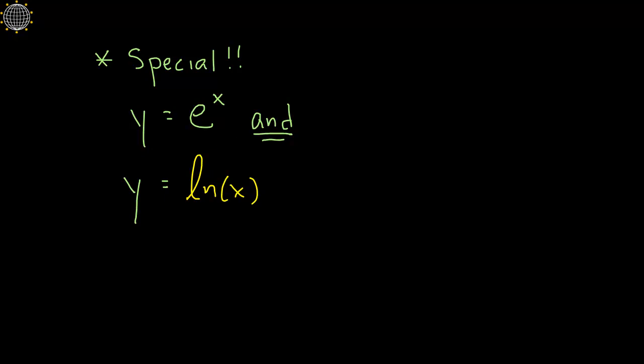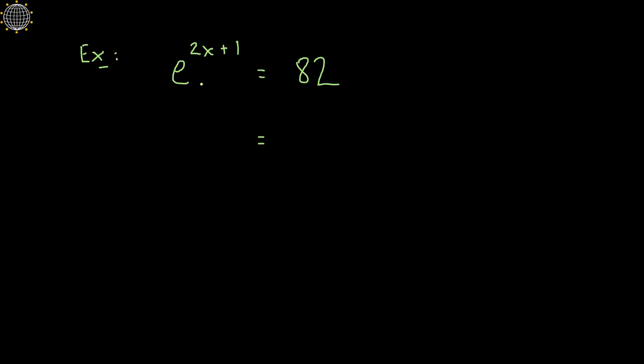Alright, so just to close out this video, I've got one quick example. So let's say we had e to the 2x plus 1 equals 82, and you wanted to solve for x. Well you have to undo every operation that's done. So this addition will be undone by subtraction, the multiplication by division, and the exponential by a logarithm. So we're going to start by getting rid of the e by taking the natural log of both sides. Natural log and e being inverses of each other will cancel, and so we'll get 2x plus 1 equals the natural log of 82.